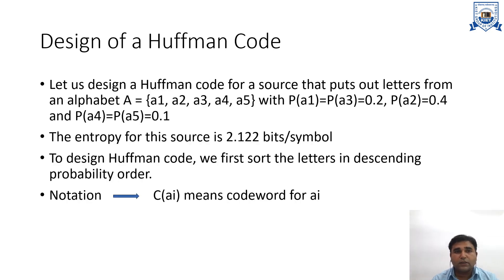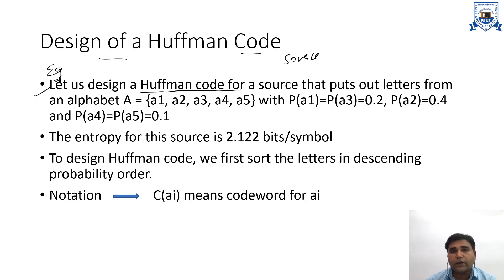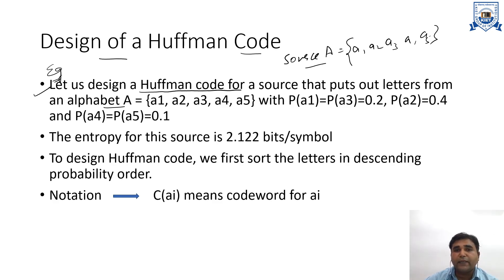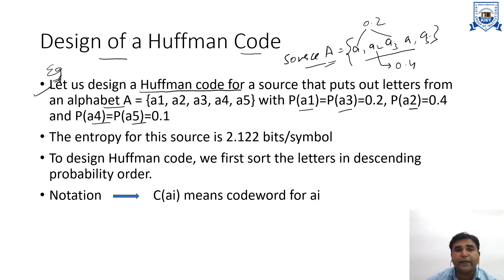Now come to the designing part. We have to design a Huffman code. Let us take an example. We have to design a Huffman code for a source with alphabet A. This alphabet A has five symbols: A1, A2, A3, A4, and A5, each with certain probabilities. The probability of A1 and A3 is 0.2, the probability of A2 is 0.4, and the probability of A4 and A5 is 0.1. The entropy of this source is 2.122 bits per symbol.